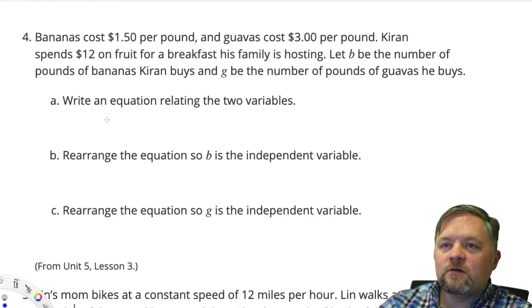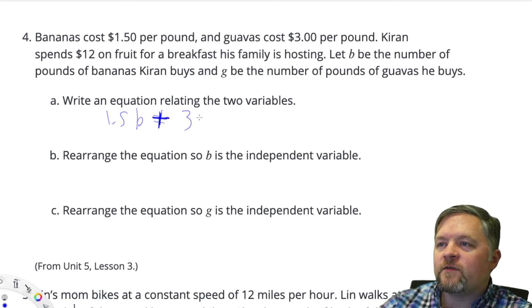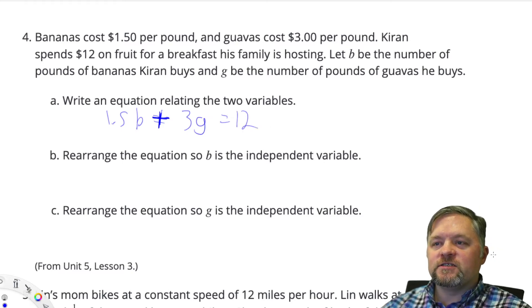So we know 1.5 times the number of pounds of bananas, b, plus $3 times the number of pounds of guavas has to equal $12, because he spent $12.